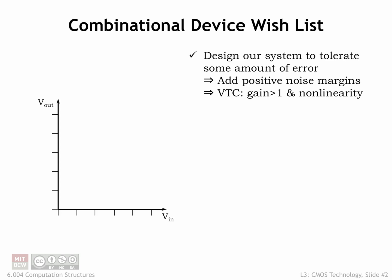Let's review our wish list for the characteristics of a combinational device. In the previous lecture, we worked hard to develop a voltage-based representation for information that could tolerate some amount of error as the information flowed through a system of processing elements. We specified four signaling thresholds: VOL and VOH set the upper and lower bounds on voltages used to represent 0 and 1 respectively at the outputs of a combinational device. VIL and VIH served a similar role for interpreting voltages at the inputs of a combinational device.